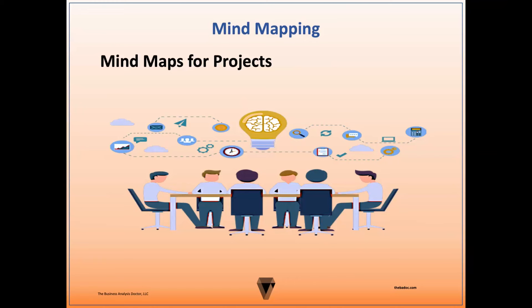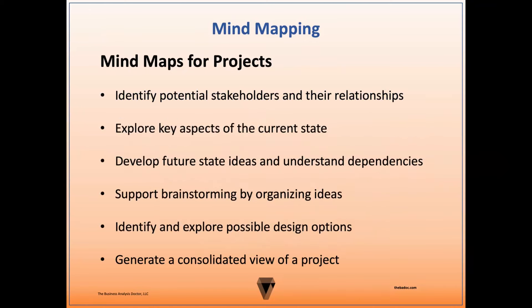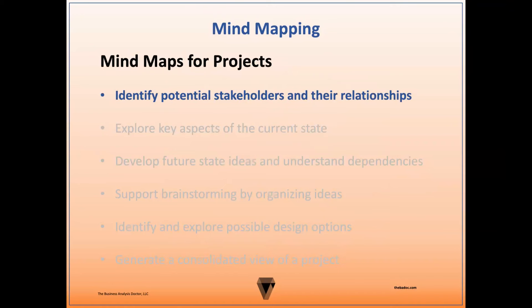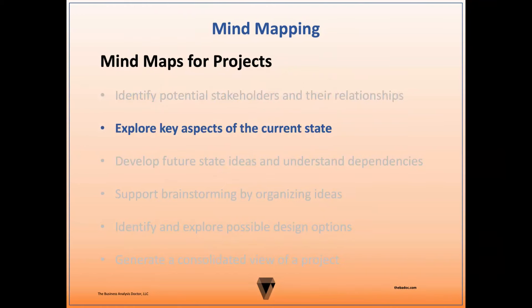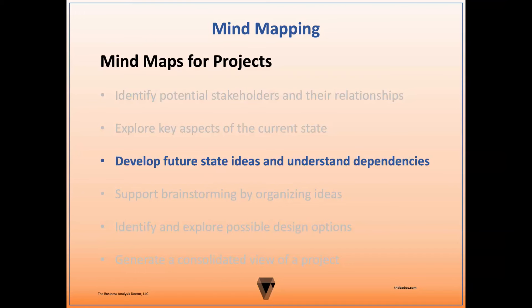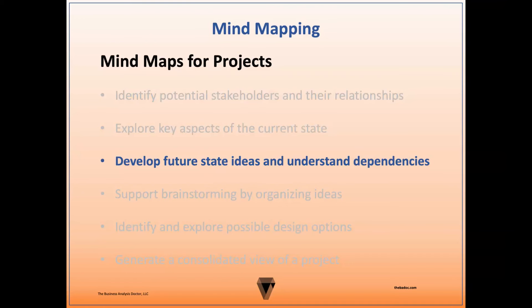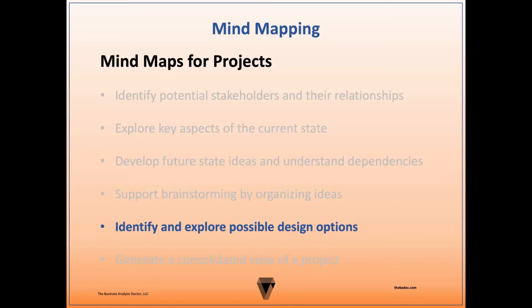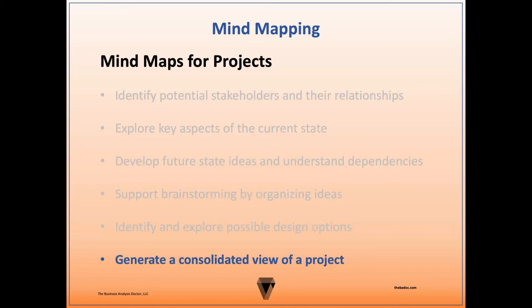So how can these mind maps specifically be used for a project? There are a number of ways a business analyst or project manager could use a mind map for a project, including to identify potential stakeholders and their relationships, explore key aspects of the current state, develop future state ideas and understand dependencies, support brainstorming by organizing ideas, identify and explore possible design options, and also to generate a consolidated view of the project. This is a common way business analysts and project managers use mind maps.